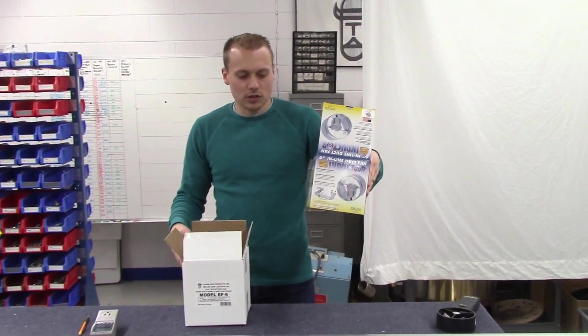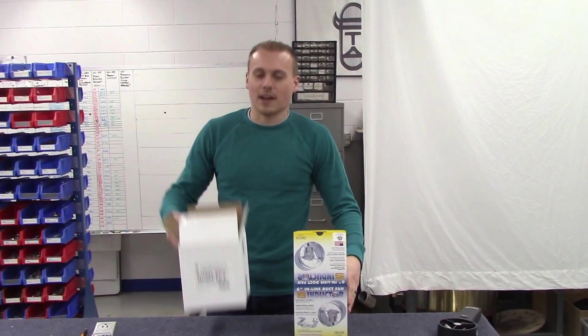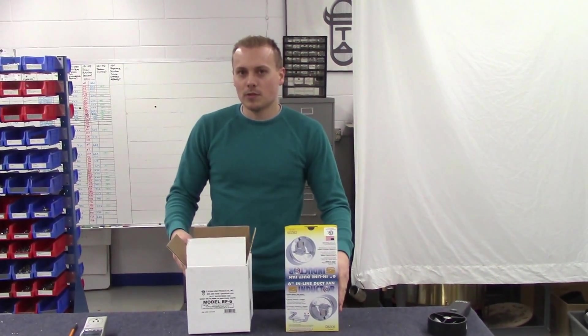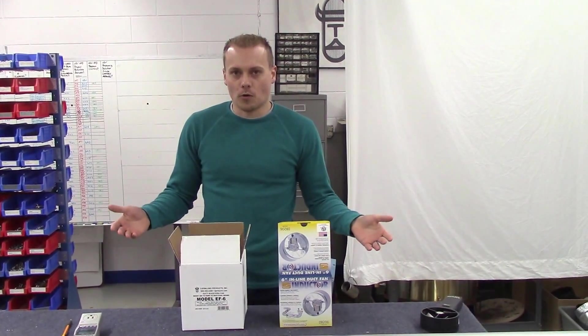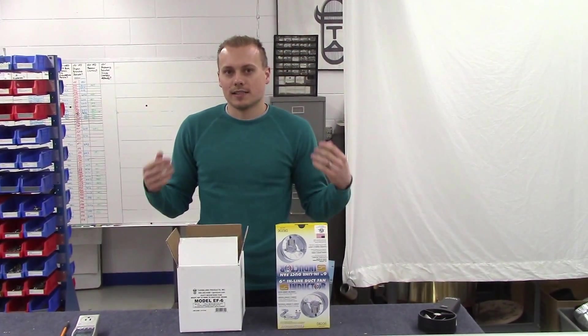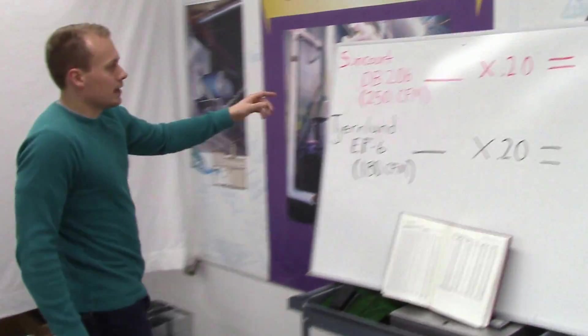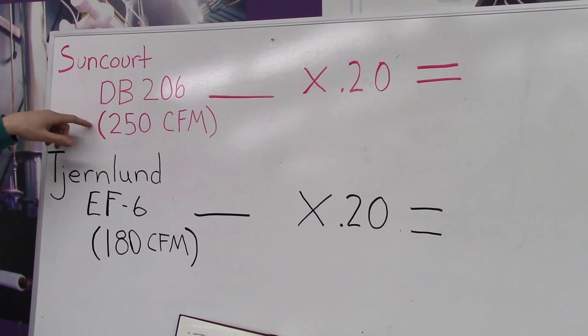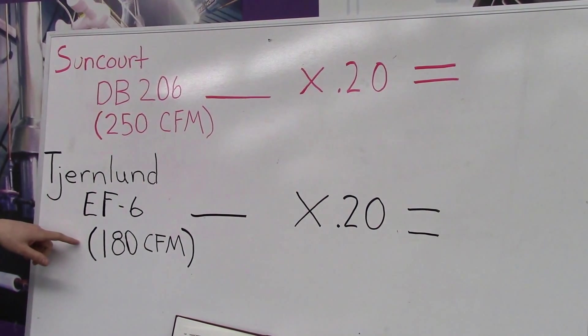We've got the Suncourt unit DB206, this is a six inch booster fan, and we've got the Tjernlund EF-6 duct booster fan. And what we're going to be doing is comparing these two booster fans, their actual performance compared to their stated performance. The stated performance of the Suncourt DB206 is 250 CFM at zero inches static, and the Tjernlund EF-6 stated CFM is 180 CFM.